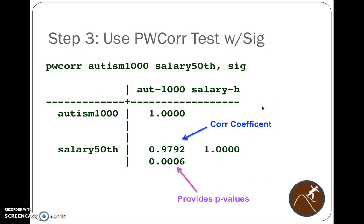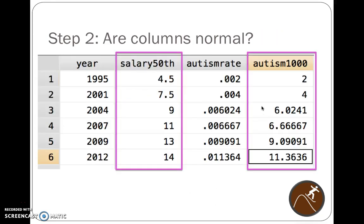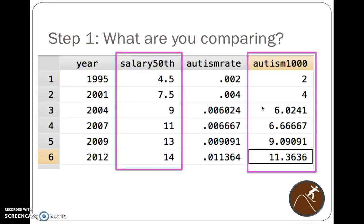Last time we left off, we were doing a pairwise correlation test and we were looking at statistically significant results. We wanted to compare Major League Baseball player salaries — the 50th richest person in Major League Baseball from 1995 to 2012 — versus the autism rates for those respective years.